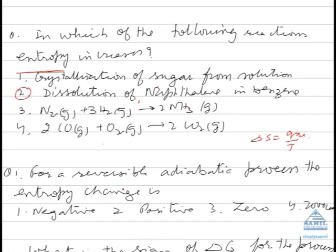Now for a reversible adiabatic process the entropy change is negative, positive, 0, or 2000? Adiabatic means Q is 0. When Q is 0 and we know delta S is equal to Q upon T, so it means entropy change will be 0.